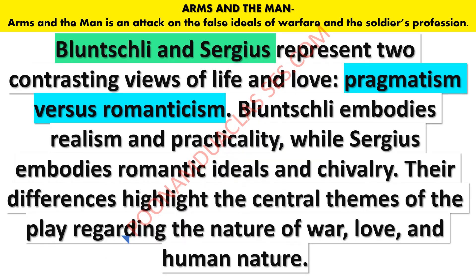Bluntschli and Sergius are completely different people — one represents pragmatism and the other romanticism. Bluntschli embodies realism and practicality, while Sergius embodies romantic ideals and chivalry. Their differences highlight the central themes of the play regarding the nature of war, nature of love, and human nature.